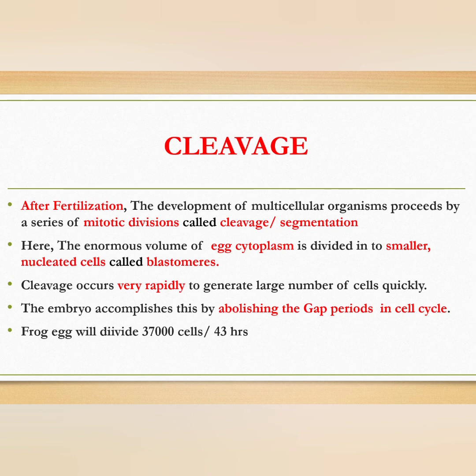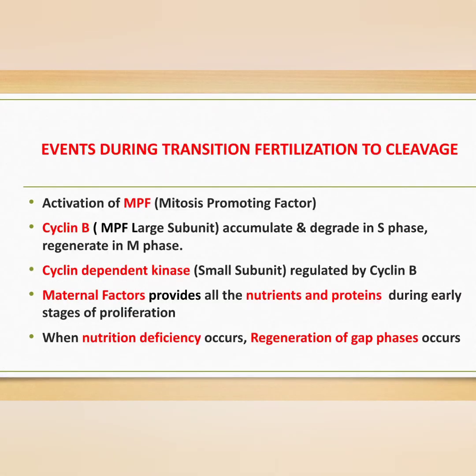The process of cleavage occurs very rapidly to generate a large number of cells quickly. The embryo accomplishes this by abolishing the gap periods in the cell cycle — G1 and G2 — so growth occurs without these gap periods. For example, in the case of frog eggs, the fertilized egg will divide to produce 37,000 cells in 43 hours.